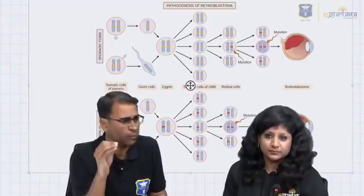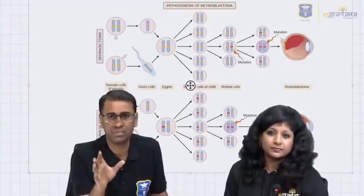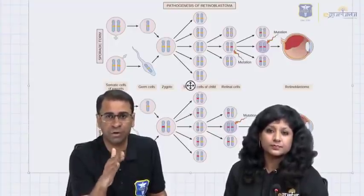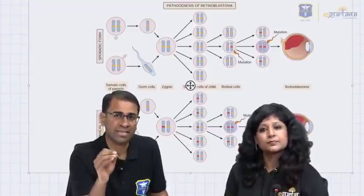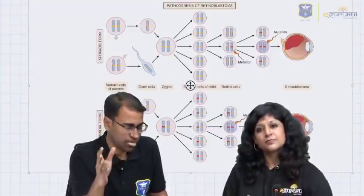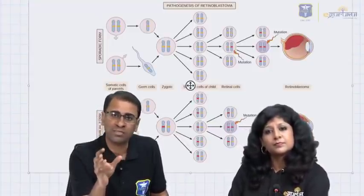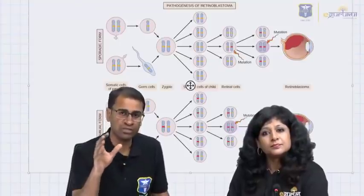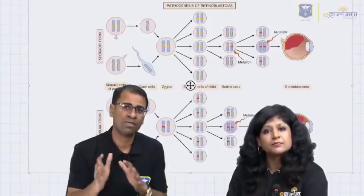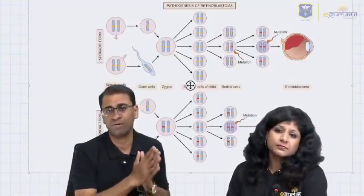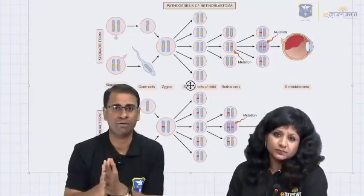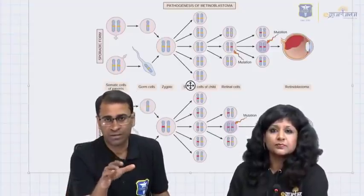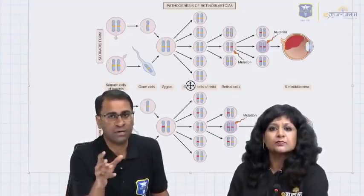Ewing sarcoma is one of the best-known PNETs. These are all small round cell tumors, and what is common among them is that they belong to the Ewing sarcoma family of tumors, which is called PNET. Retinoblastoma is coming from the RB gene.